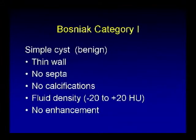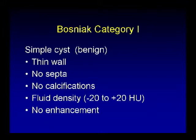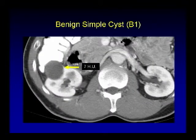Bosniak 1 cysts are simple benign cysts with thin wall, no septa, no calcification, and a fluid density between minus 20 to positive 20 Hounsfield units, and obviously no enhancement. Here's an example of a simple cyst at 7 Hounsfield units, Bosniak type 1 cyst, benign.